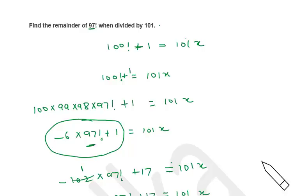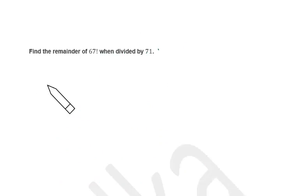So I take the next problem and that problem you can try on your own, then finally you can match your answer with mine. Find the remainder of 67 factorial when divided by 71.